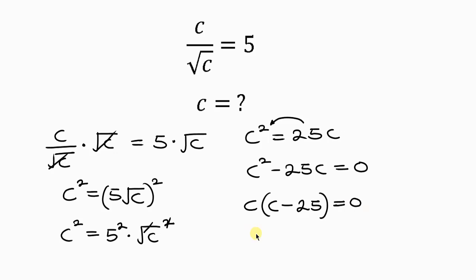Now we have two cases. We have C to be equal to 0, or we have C minus 25 to be equal to 0.